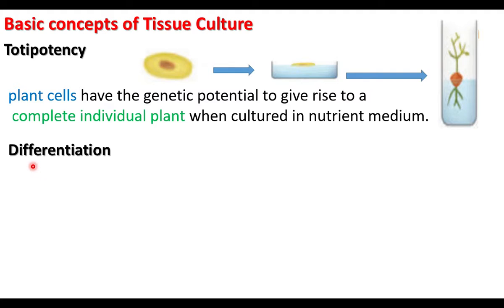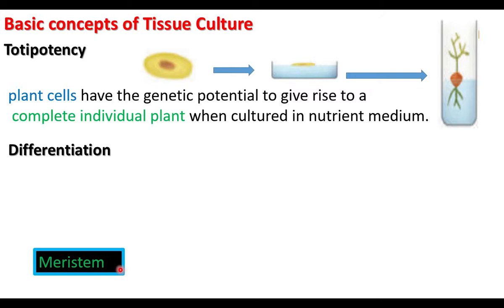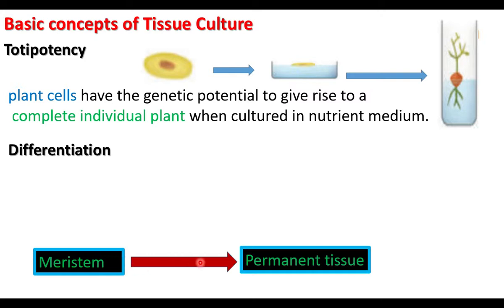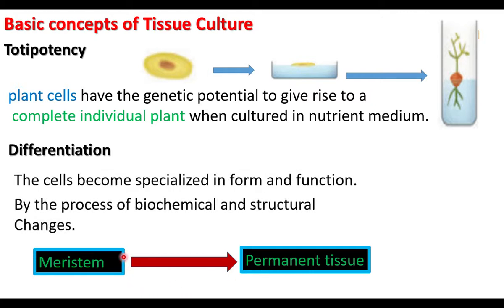The second basic concept is differentiation, seen in normally growing plants in a natural environment. Meristem is the young tissue found at the tip of root and shoot, made up of young cells that divide actively and produce new cells. The meristem changes its structure and function to form permanent tissues like parenchyma, collenchyma, sclerenchyma, xylem, and phloem. This change from meristem to permanent tissue is called differentiation.